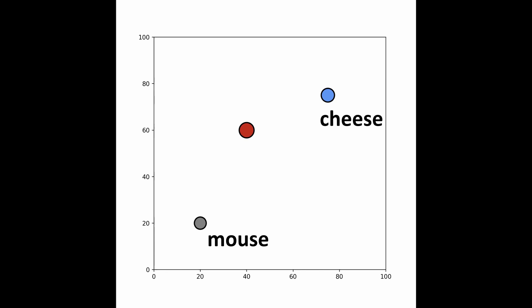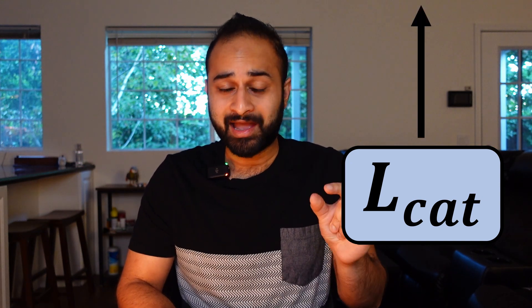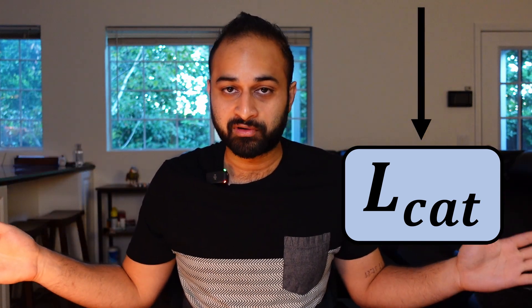But beware — on the top left you have the cat, and if the cat catches you before you get the cheese, then you're dead. As the mouse, you have two loss functions in mind — loss function and objective function are used interchangeably here. They're basically just functions that tell you how close or far you are from meeting certain objectives. You have a loss function for the cheese, L_cheese, which is lower when you're close to the cheese and higher when you're far. You also have a loss function for the cat, L_cat, which behaves in the opposite way — the closer you are to the cat, the higher the loss; the further you get from the cat, the lower the loss.